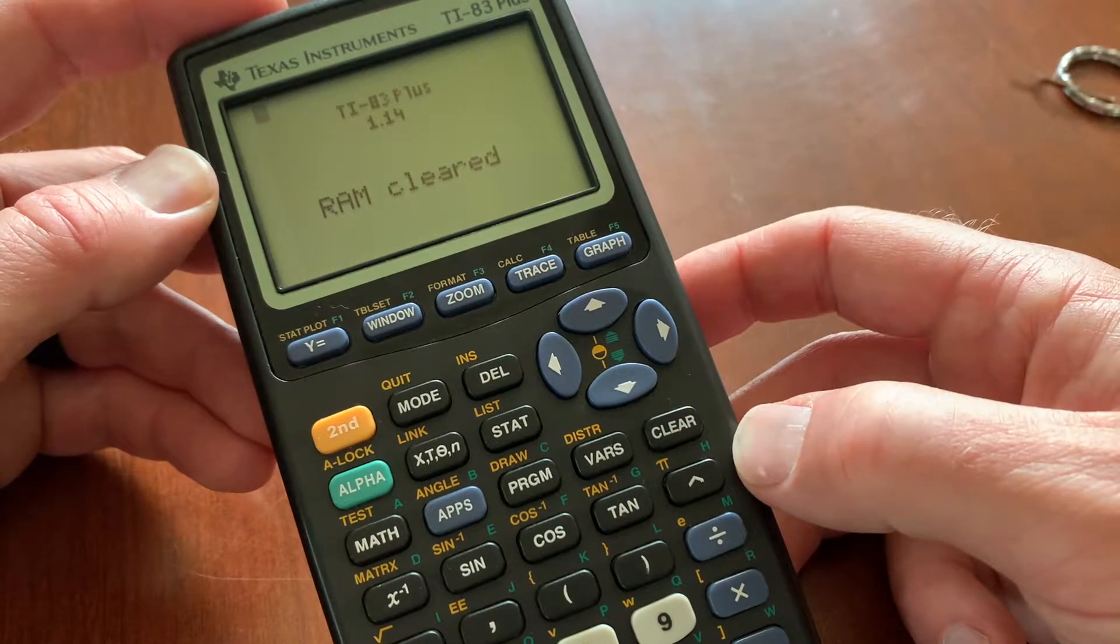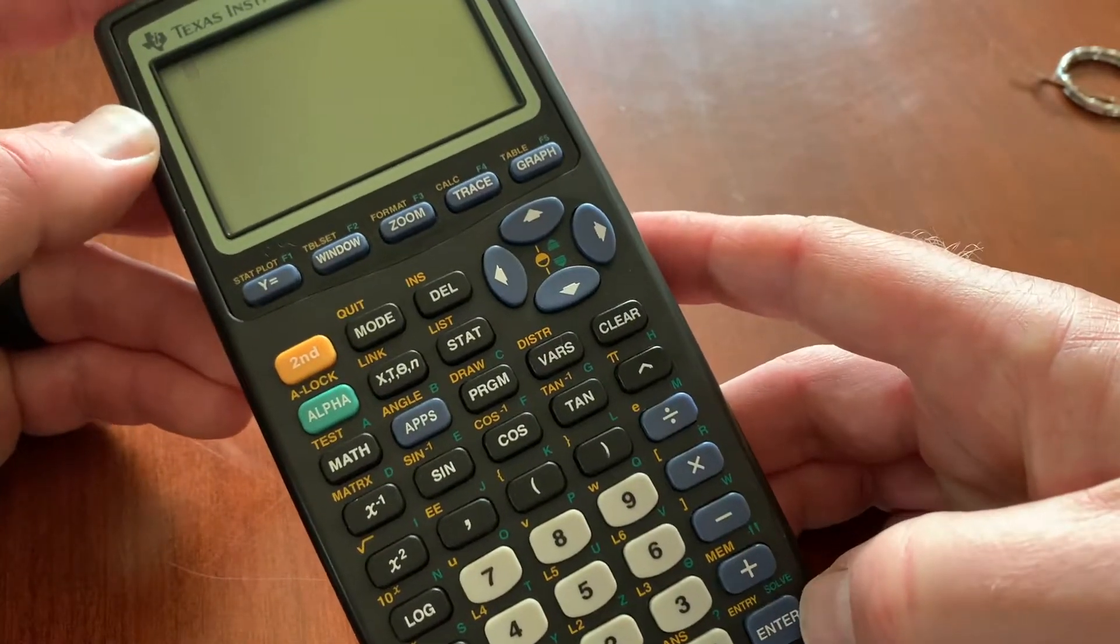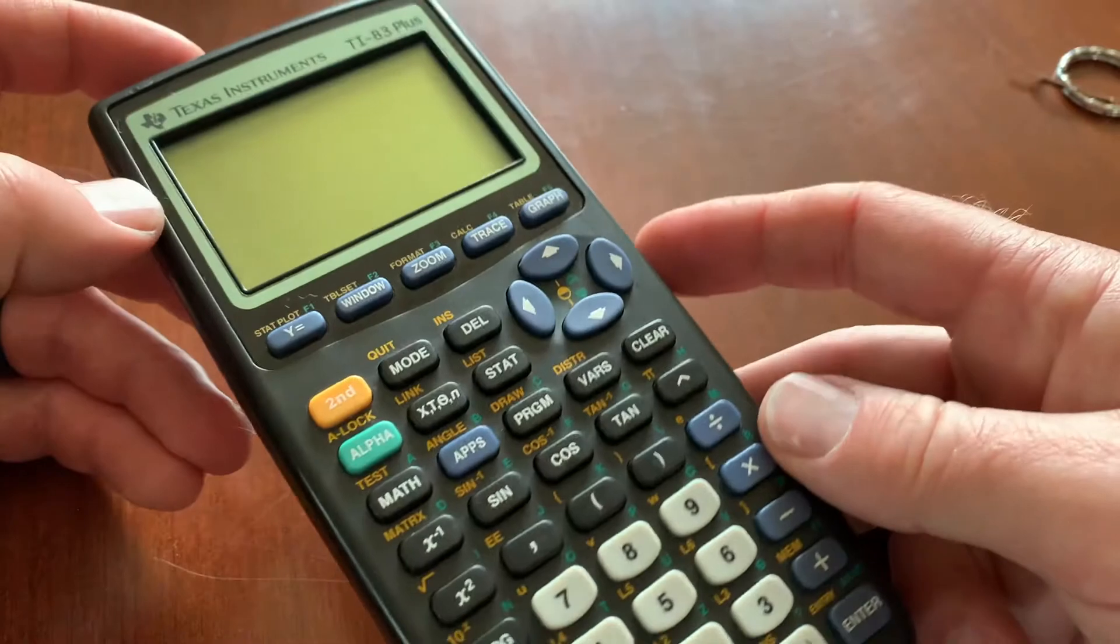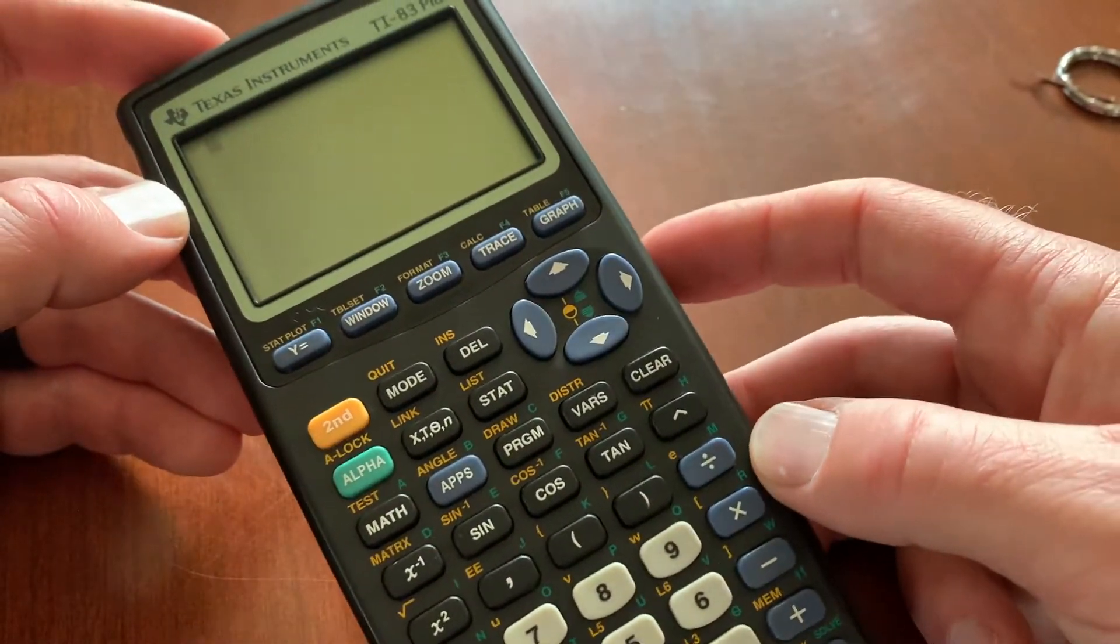And then as you can see, the RAM is now cleared. So we hit the clear button and it'll take us back to the home screen here. So again, that is basically on its factory settings now. Pretty simple process.